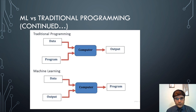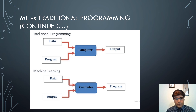This figure explains the difference between machine learning and traditional programming. In traditional programming, a computer takes input of data and a program and produces output. Whereas in machine learning, we provide the data and the output, and the computer gives us a program or model that we can use to generate future outputs from future data.